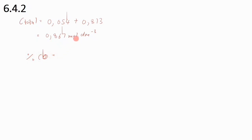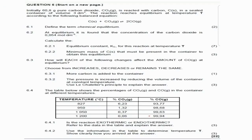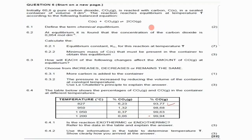Percentage yield of CO = (0.813 / 0.867) × 100 = 93.77%. Checking the table, 93.77% corresponds to a temperature of 827°C. Therefore temperature T = 827°C.